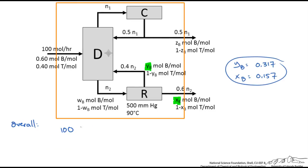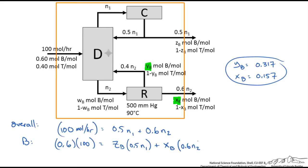Let's take a look at an overall balance. We write 100 moles in equals 0.5N1 plus 0.6N2. We could do a benzene or toluene species balance, so I will do benzene. 0.6 is the mole fraction of entering benzene. This is going to equal ZB, the mole fraction of benzene in the distillate stream, times 0.5N1, plus XB, the mole fraction in the liquid stream or bottom stream, times 0.6N2.